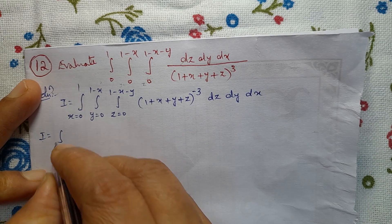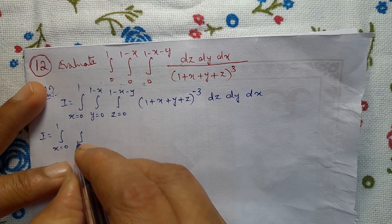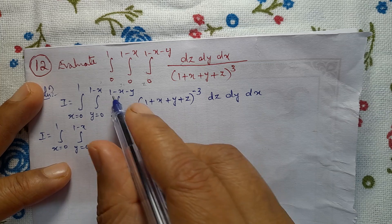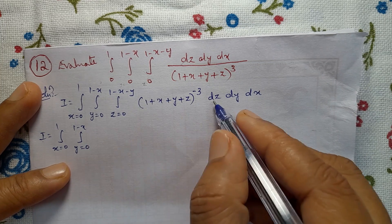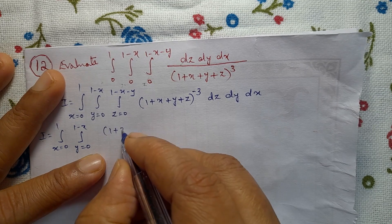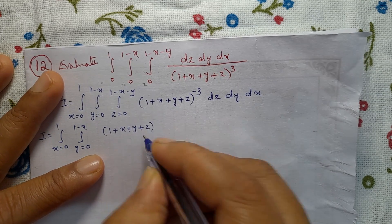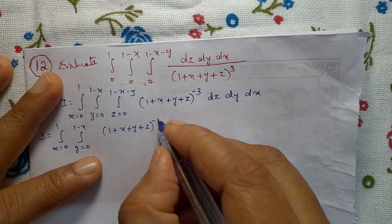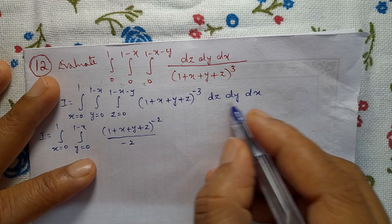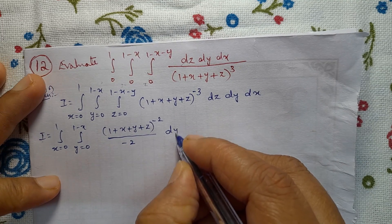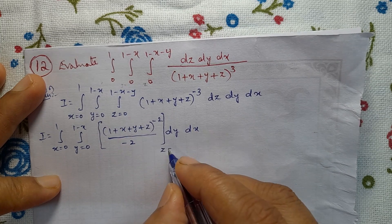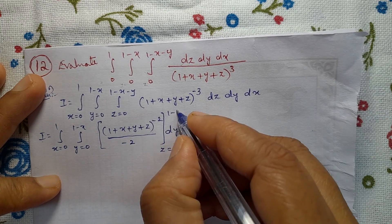I equals integral x from 0 to 1, integral y from 0 to 1 minus x, integral z from 0 to 1 minus x minus y. Integrating (1 + x + y + z)^(−3) with respect to z gives (1 + x + y + z)^(−3+1) / (−3+1) = (1 + x + y + z)^(−2) / (−2). Apply z limit from 0 to 1 minus x minus y.